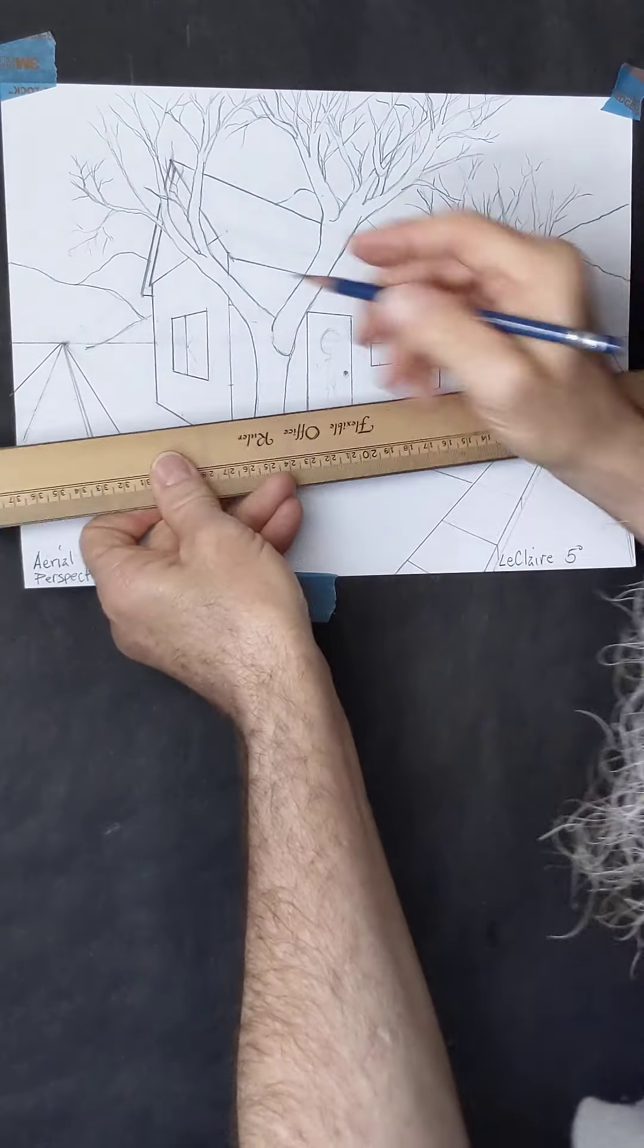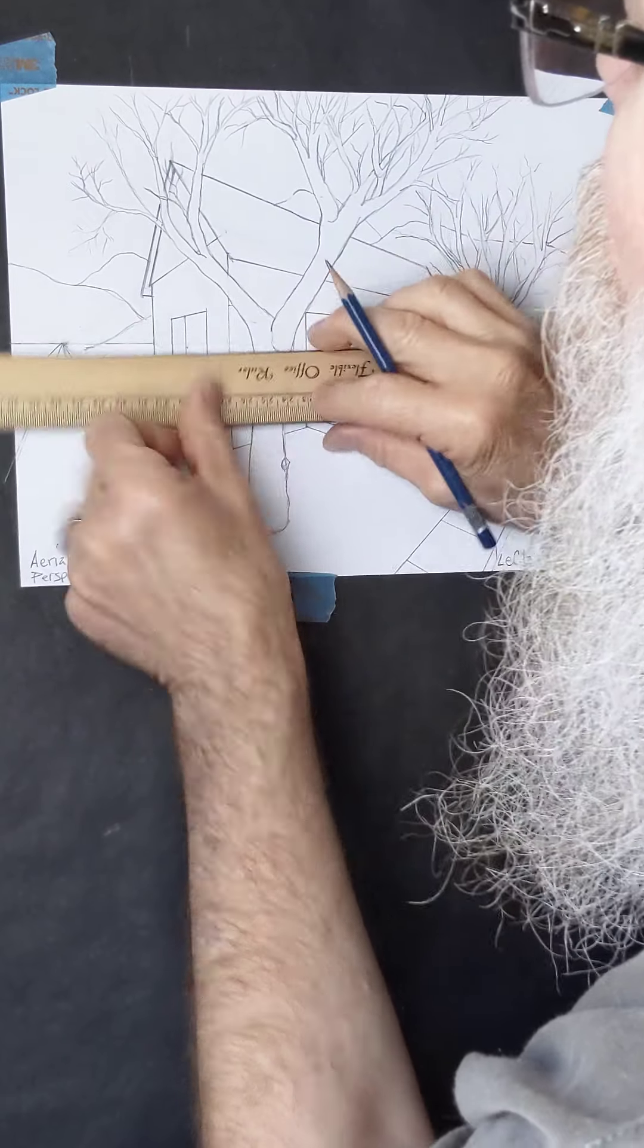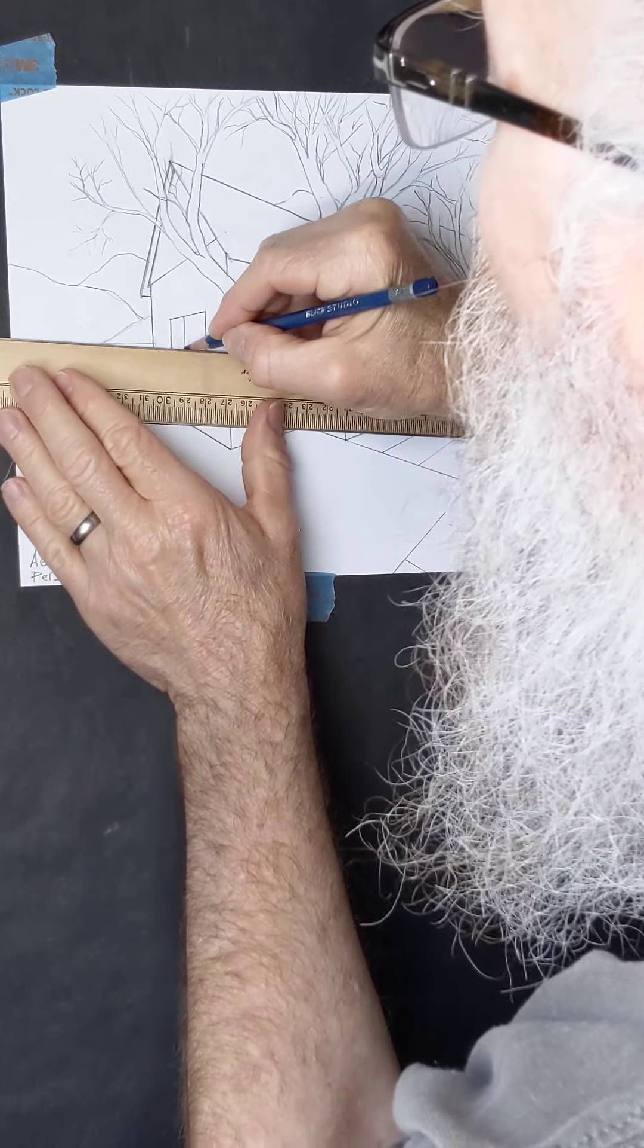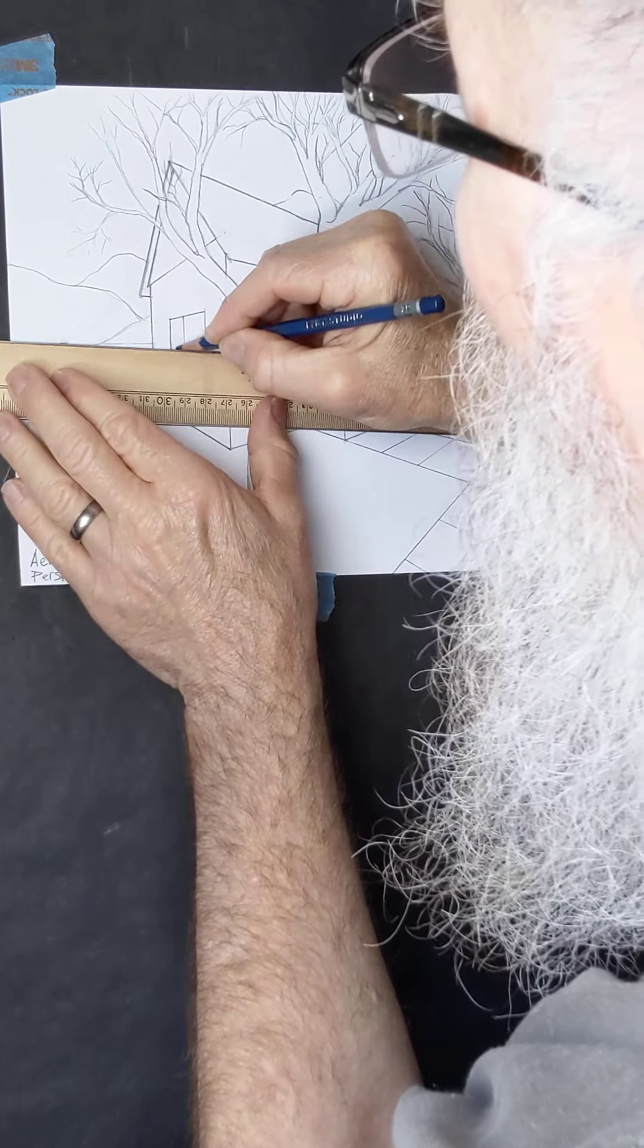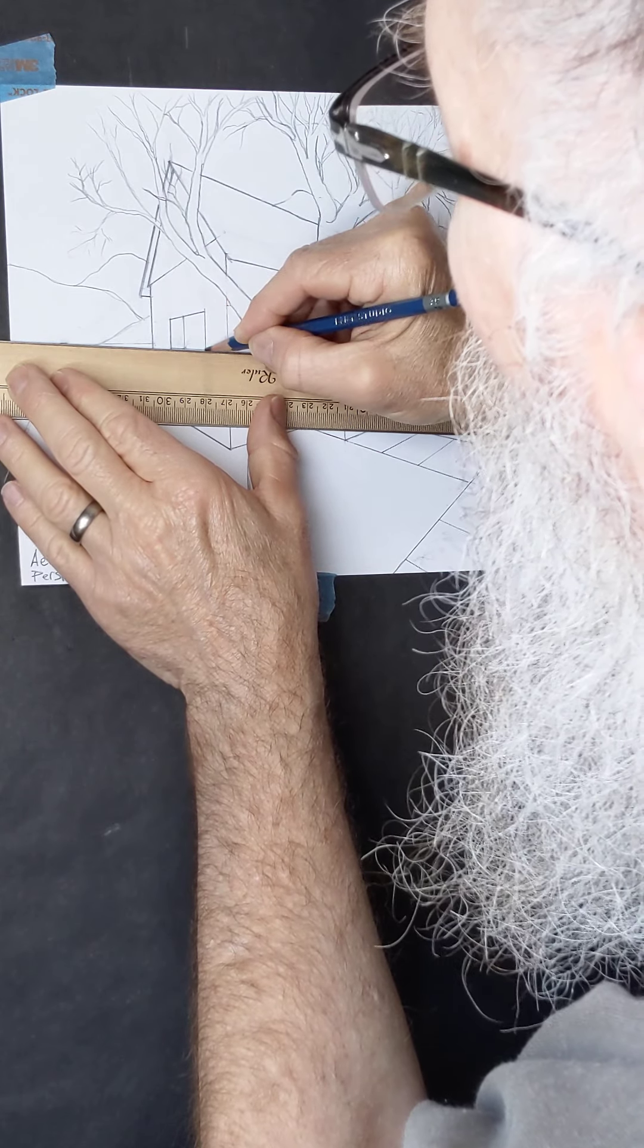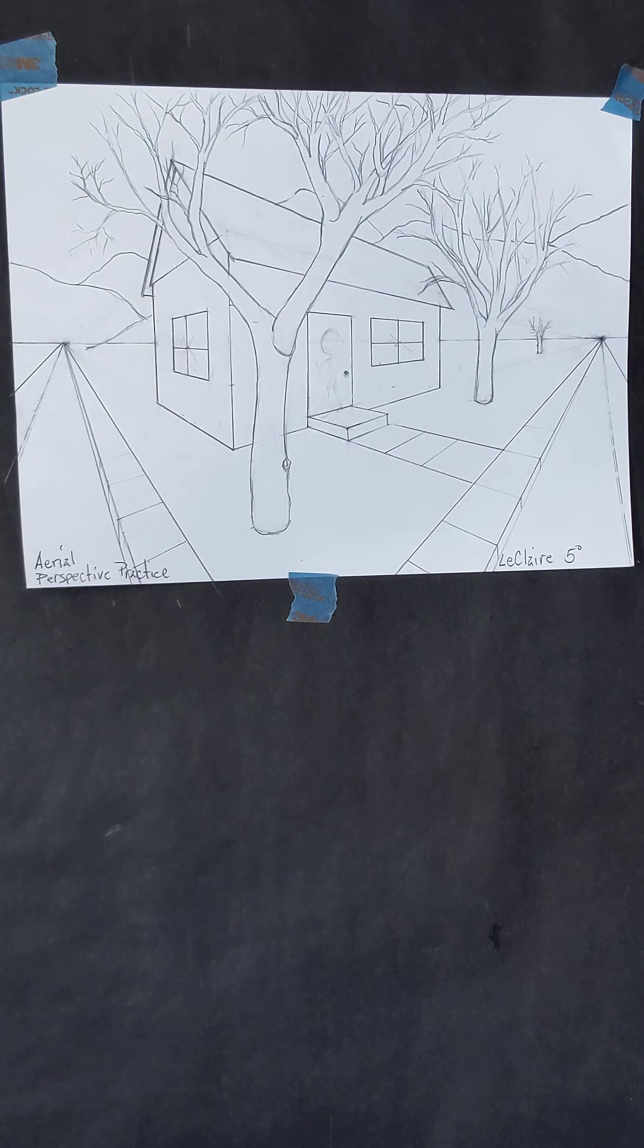And then once again it's a little bit lower than the horizon line on this one, so we're going to put it up next to it, and from there to there. Now there's the window panes for that window.